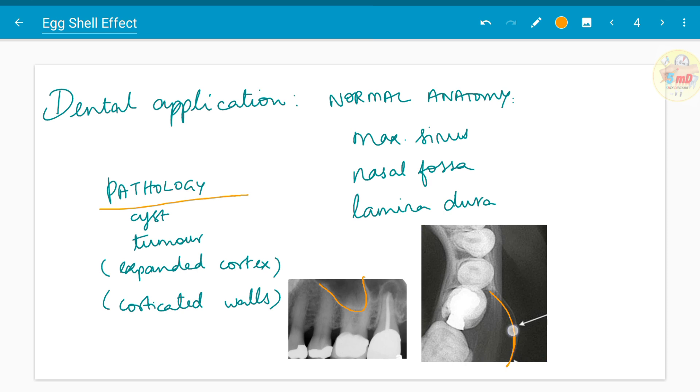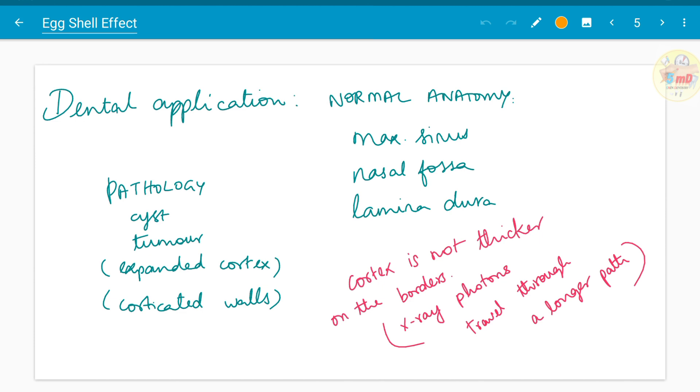It does not mean that the cortex is more thicker physically. It is a radiographical appearance. As I said, since like an eggshell which is of uniform thickness, only the corners appear more thicker in x-ray.